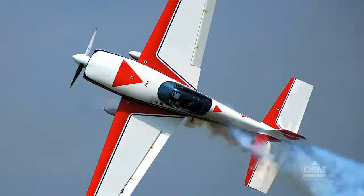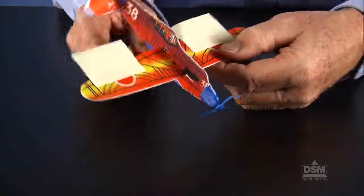Explain that on real planes, the ailerons always work together. One tilts up while the other tilts down. Distribute two more sticky notes to each team and have them place one note on each wing to make ailerons.